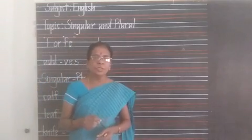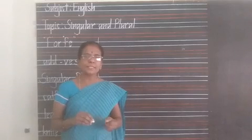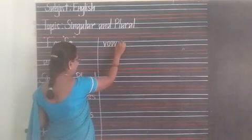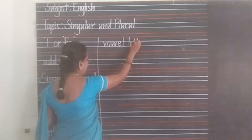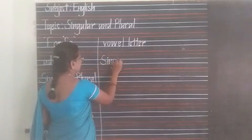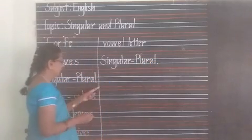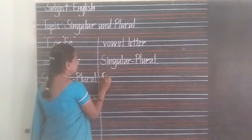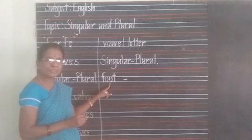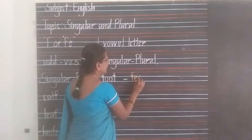Another rule: some nouns take their plural form with a change in vowel letters. They just change the vowel letter. For example, singular: F-O-O-T, foot. Foot is a singular word. The vowel letters OO are changed to form the plural — F-E-E-T, feet.